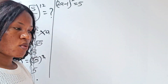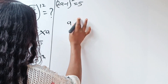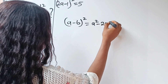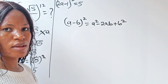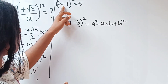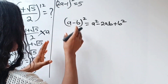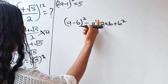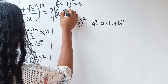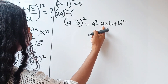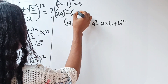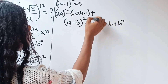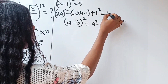Now, recall that (a − b)² = a² − 2ab + b². In this case, our a is 2a and our b is 1. So we are going to substitute: (2a)² minus 2 times 2a times 1 plus 1² is equal to 5.